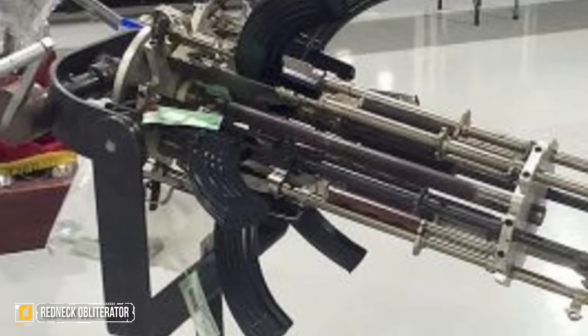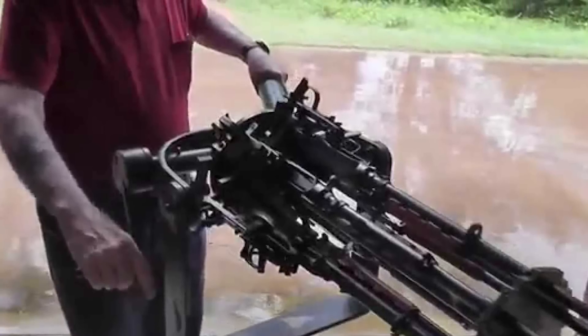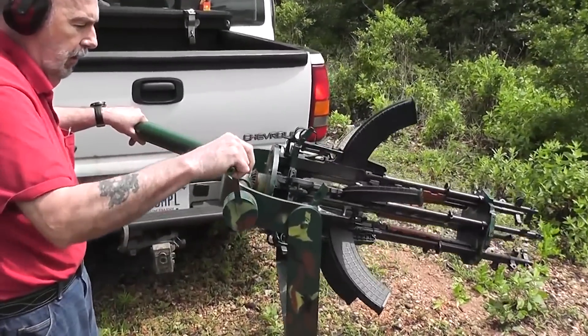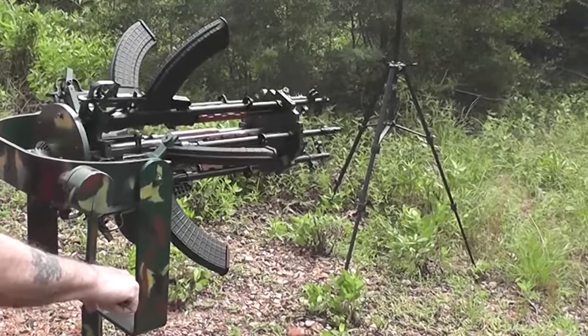Number 2: Redneck Obliterator. We're not trying to make up funny names here. This homemade contraption is actually called the Redneck Obliterator and is completely legal to own and operate in most U.S. states, despite its terrifying appearance.